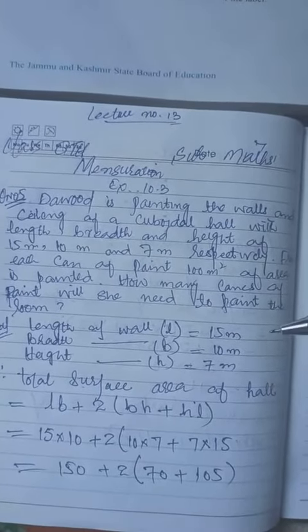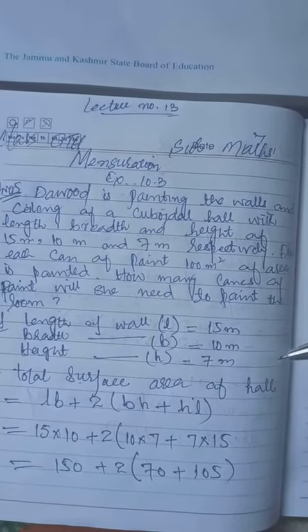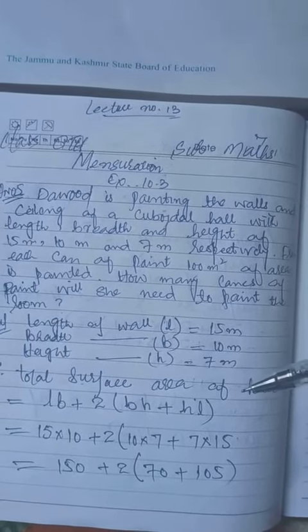Length of wall L = 15 meters, breadth of hall B = 10 meters, height H = 7 meters. Total surface area of hall equals...